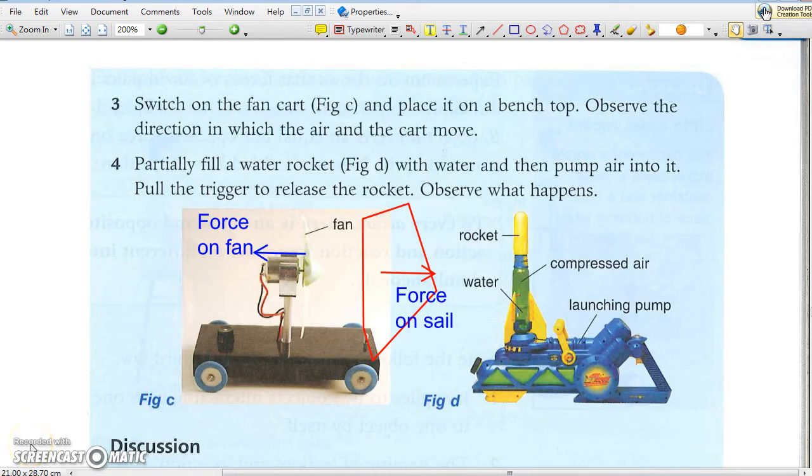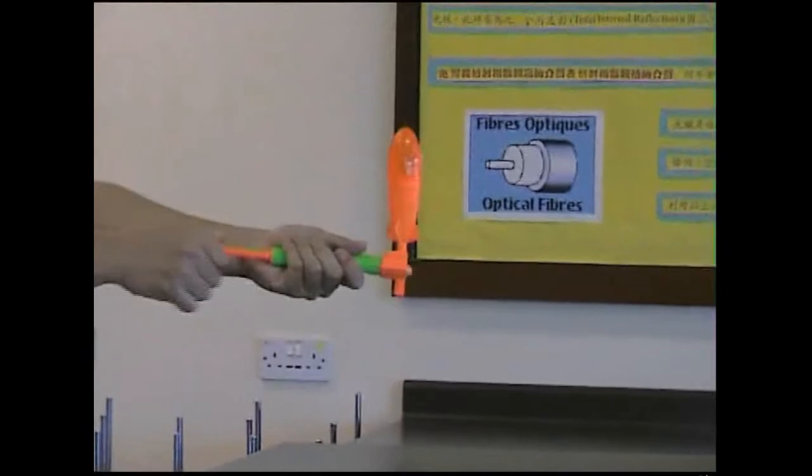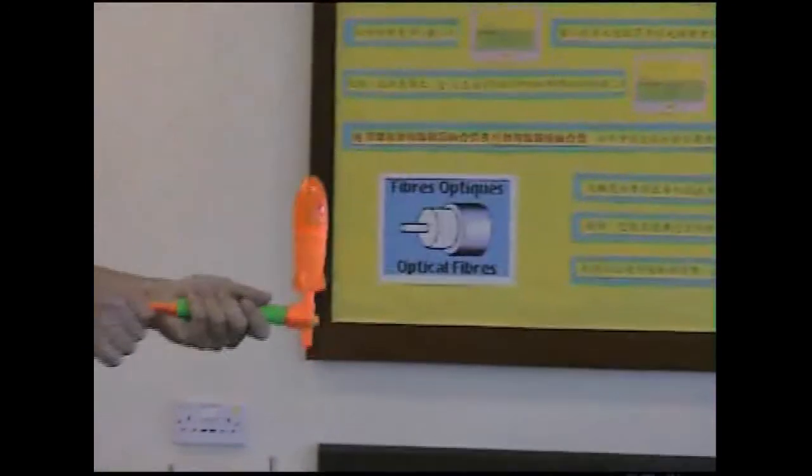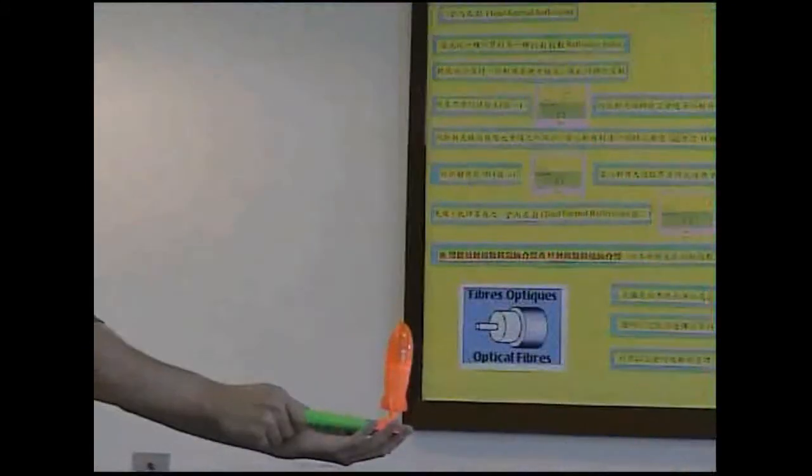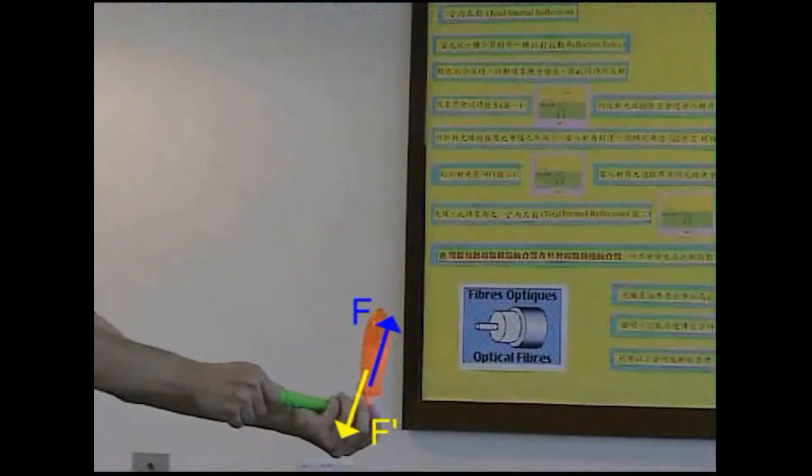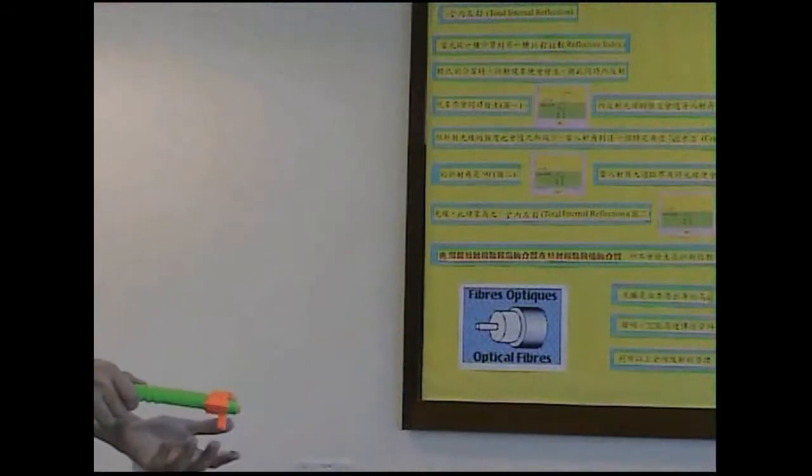Now let's take a look at the water rocket video. Partially fill a water rocket with water and pump air into it. Pull the trigger to release the rocket. Observe what happens.